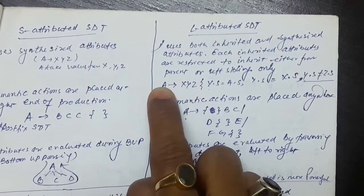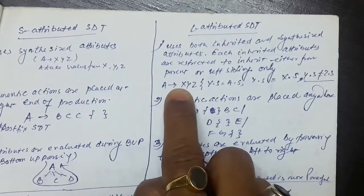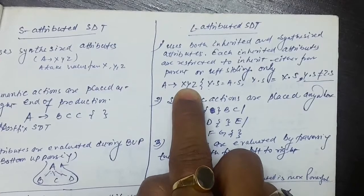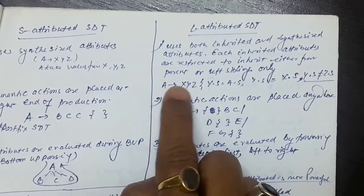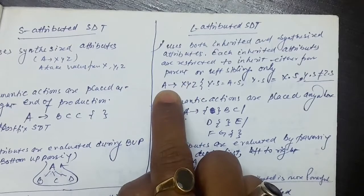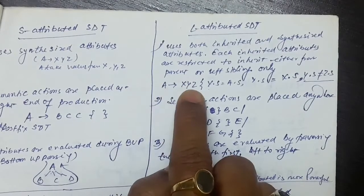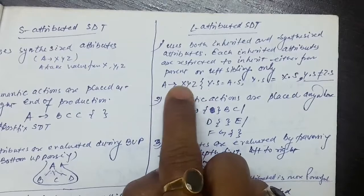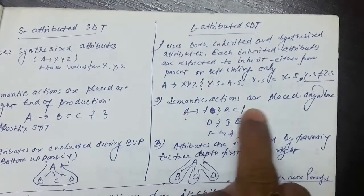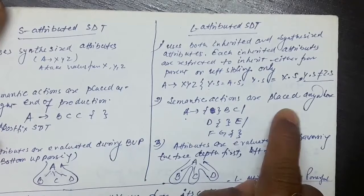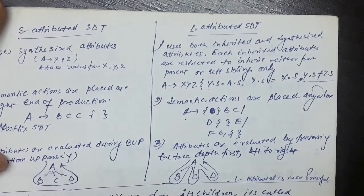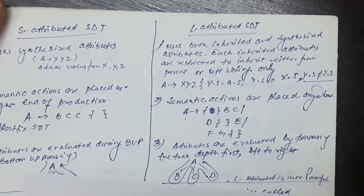For example, X may take the value from A, Y may take the value from X, and Z may take the value from Y. So children may take values from the parent or from the left child. In L-attributed SDT, the semantic action can be placed anywhere in the production.